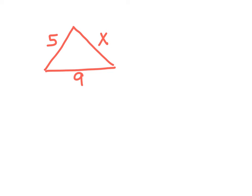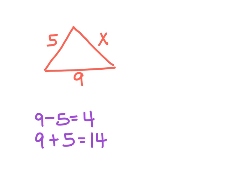I'd like you to push pause, draw this one out, and try this one — what could the possible side lengths for X be? Push play when you're ready to see the solution. To find the smallest, subtract: 9 minus 5 is 4. To find the biggest, add: 9 plus 5 is 14. So my X can be between 4 and 14, and I'll put my inequality symbols: X is bigger than 4 and X is less than 14.